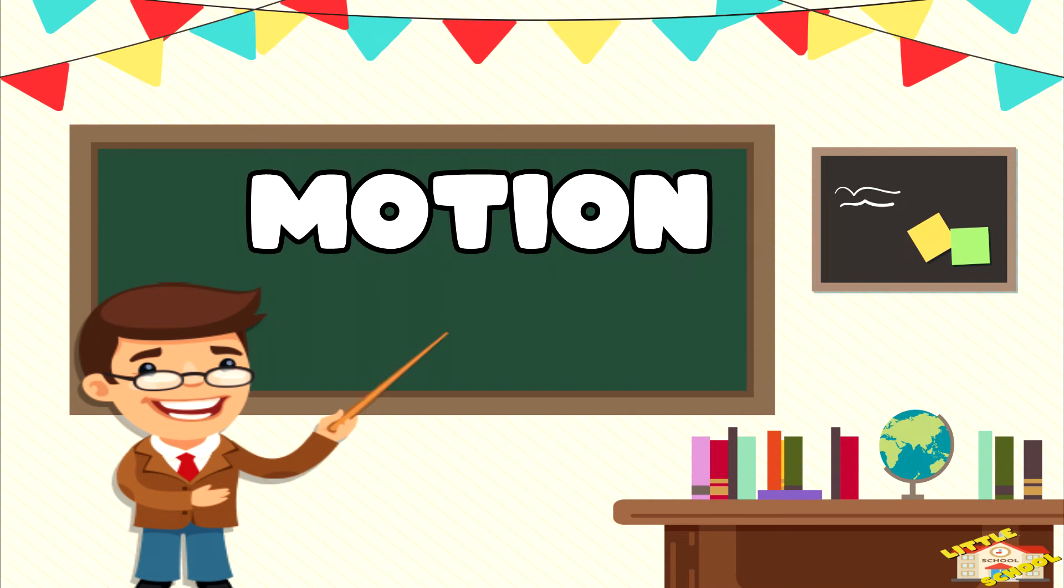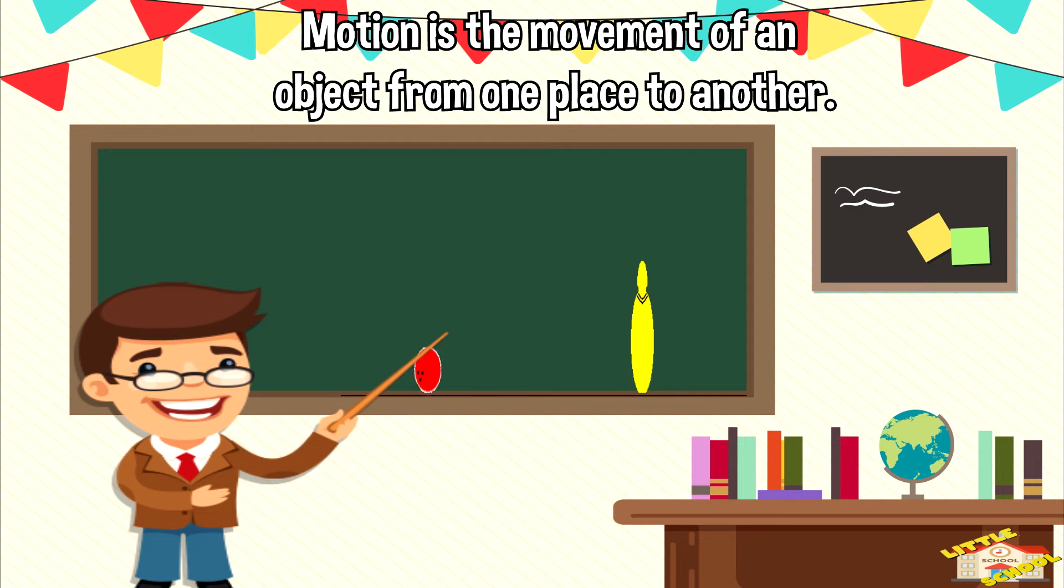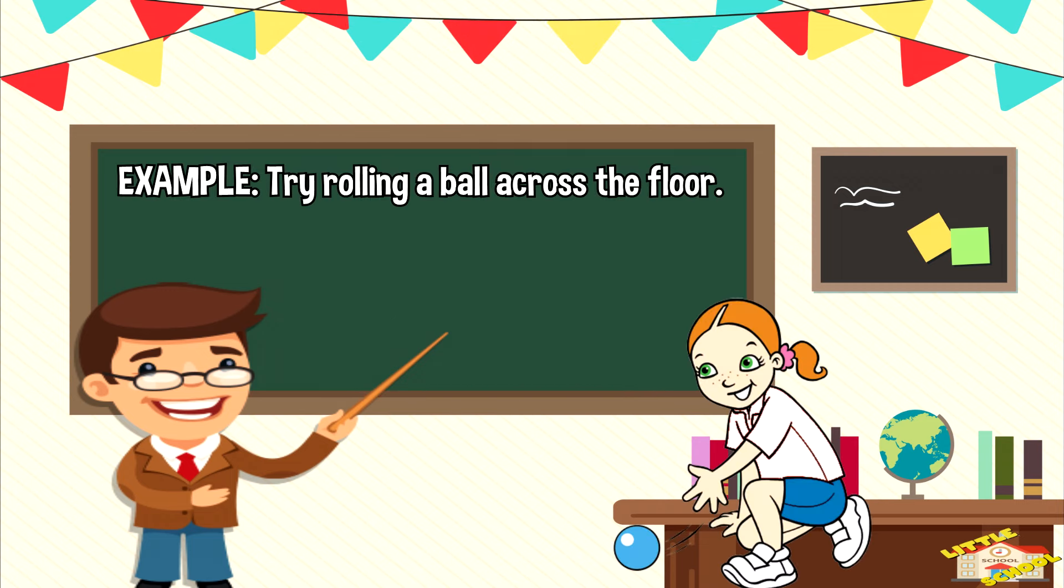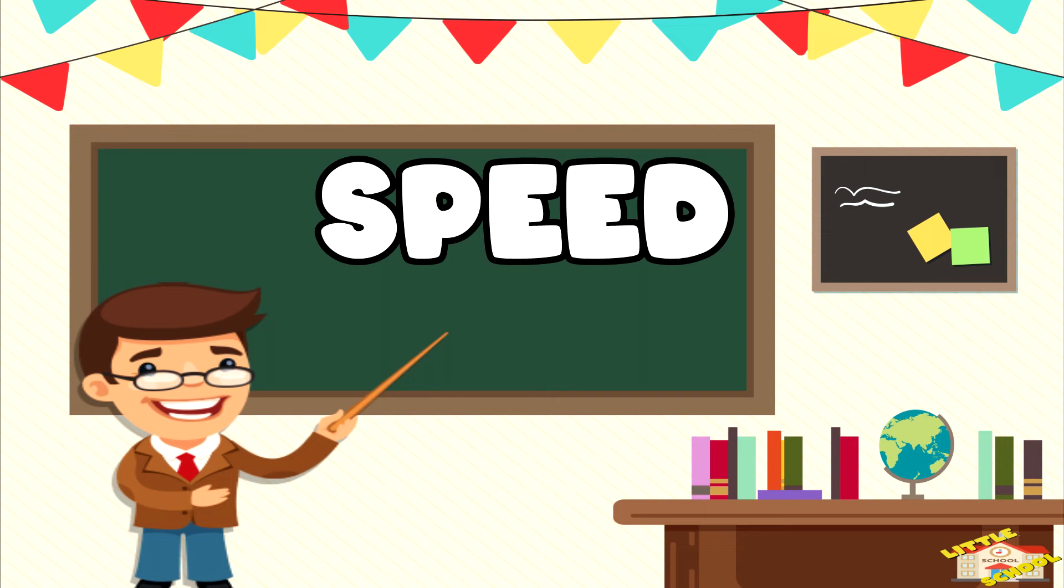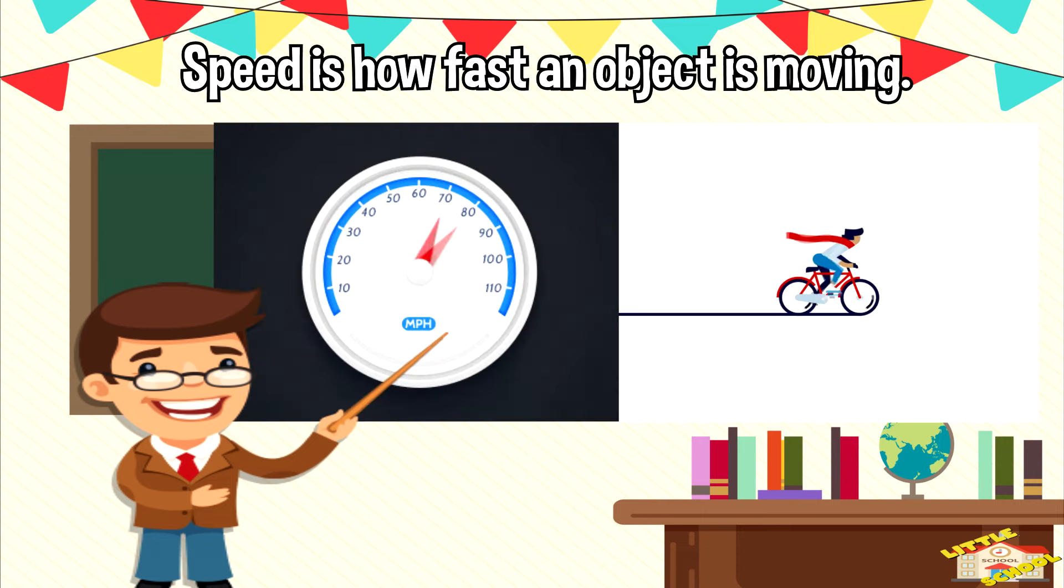What is motion? Motion is the movement of an object from one place to another. Here's an example of motion: try rolling a ball across the floor and observe how it moves.